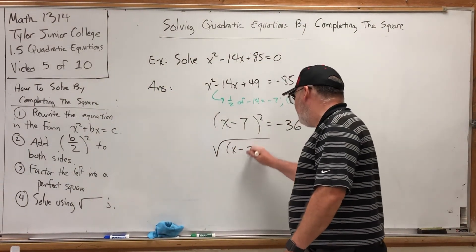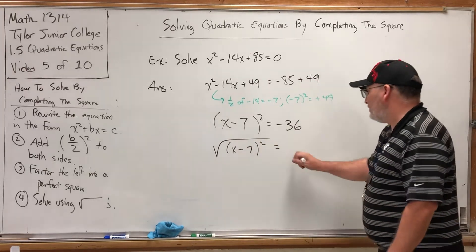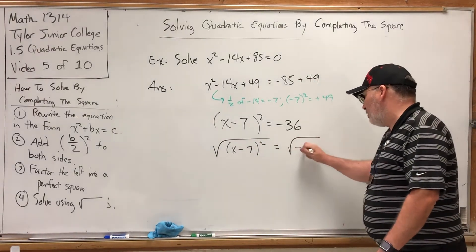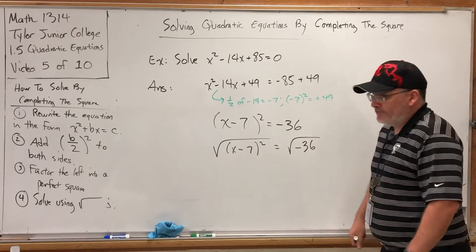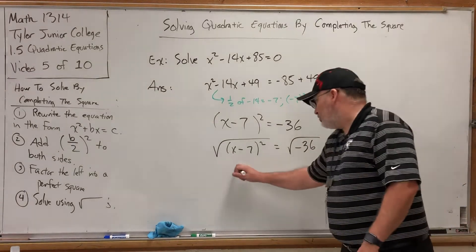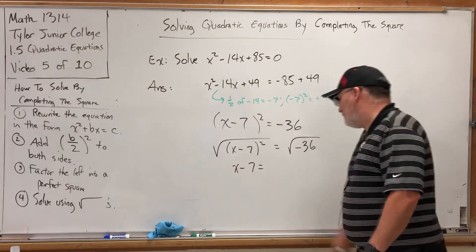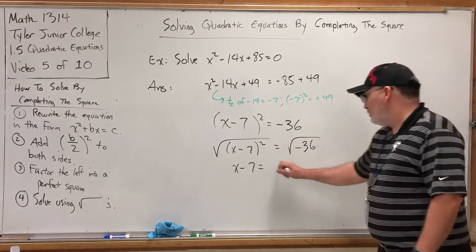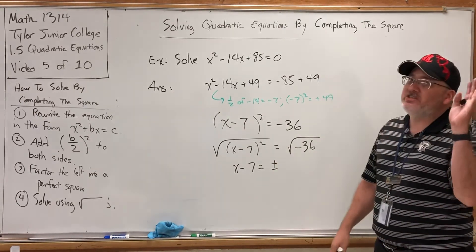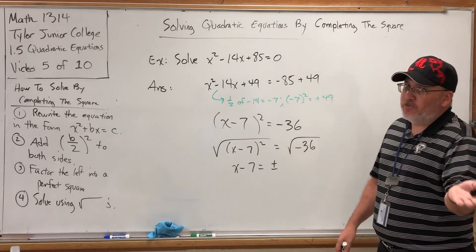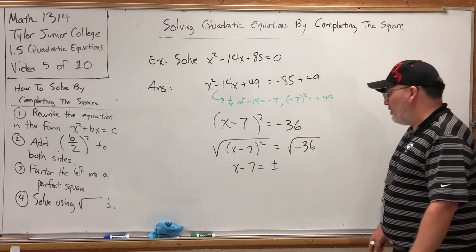Get the square root of x minus 7 squared equals the square root of negative 36. Here comes imaginary numbers. Square root cancels the square, leaving x minus 7. Over here, we use a plus minus. That is so easy to forget. That's the biggest problem with solving using square roots. Remembering the plus minus.